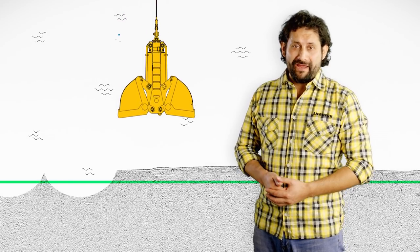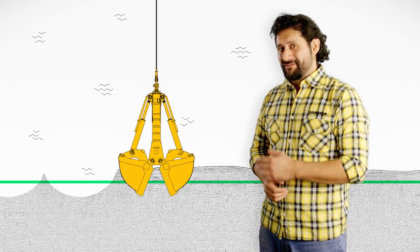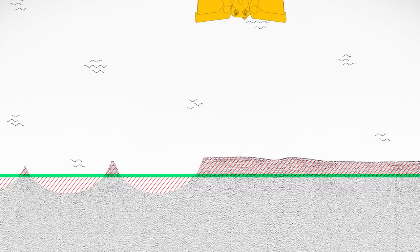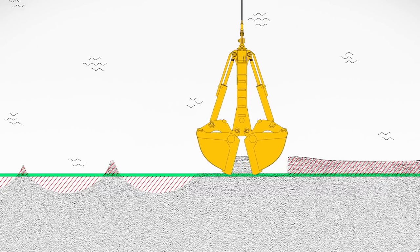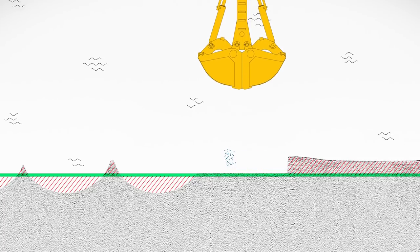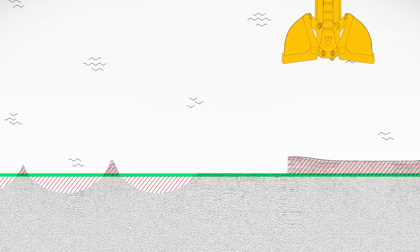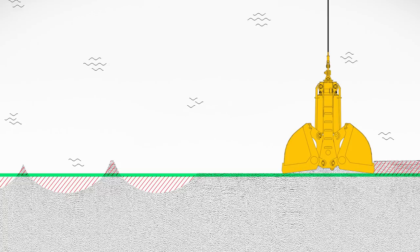Due to the shape of the grab, the ground surface looks like this when dredging. Using the function level cutting, flat excavation is possible. Again, through the coordination of both winches, the cutting edge of the grab is moved exactly horizontally, automatically. So the ground surface is level and over-excavation is avoided.